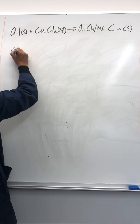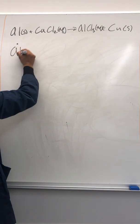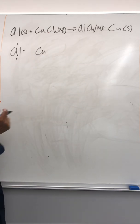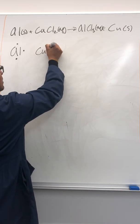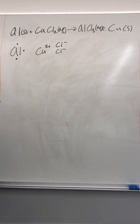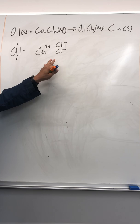Okay, first thing first, aluminum has three valence electrons. Copper chloride in water, aqueous, it breaks apart into its ions. So you have Cu2+, and these Cl minuses. This is an ionic compound.